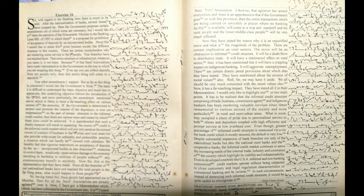Now they have stated the reason why it is an unjustified move and what is the magnitude of the problem. There are certain implications on vital sectors. The move will be an obstruction to informal credit structure. It will be a death blow to distributive trade. It will have detrimental effect on rural sector. Then it has been mentioned that it will have a crippling impact on indigenous banking.